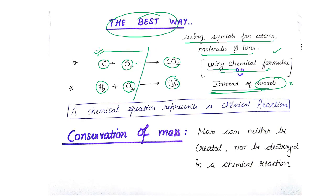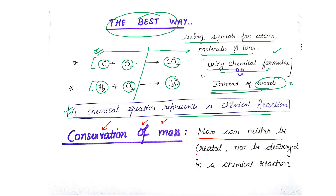Similarly, hydrogen combines with oxygen to form water. Whatever is written on the left-hand side of the arrow is the reactants; whatever is on the right-hand side is the product. A chemical equation represents a chemical reaction taking place. But the question is: is this way of representing the chemical equation 100% correct? The answer is no, because of conservation of mass — mass can neither be created nor destroyed in a chemical reaction.